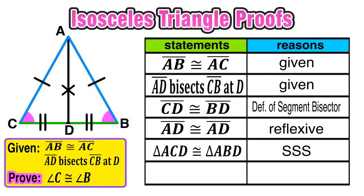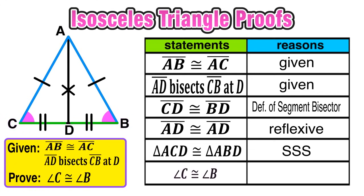Now remember that we wanted to prove that angle C and angle B were congruent, and those angles are both within the two triangles that we just showed were also congruent. So we can say that angle C is congruent to angle B by CPCTC, which means corresponding parts of congruent triangles are congruent. And we are done with this proof!